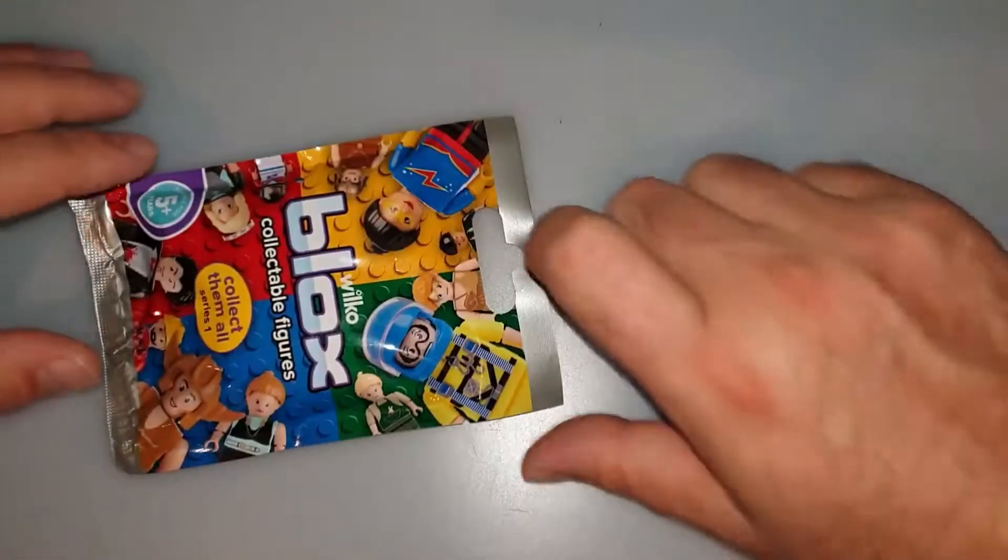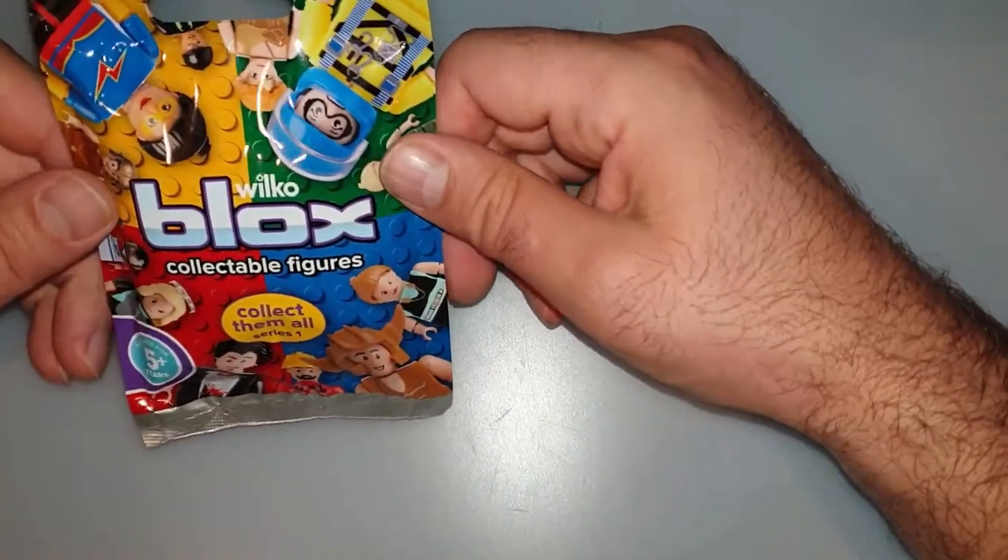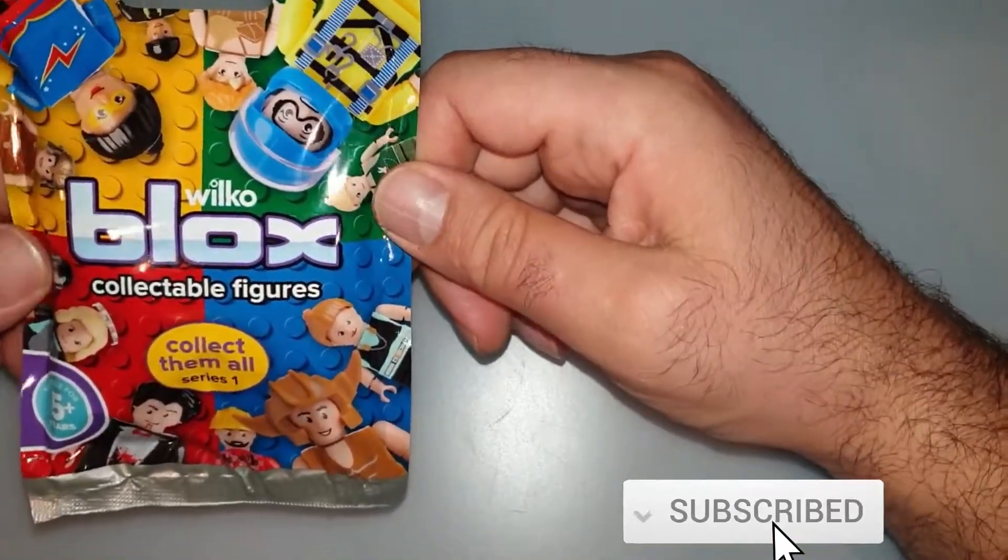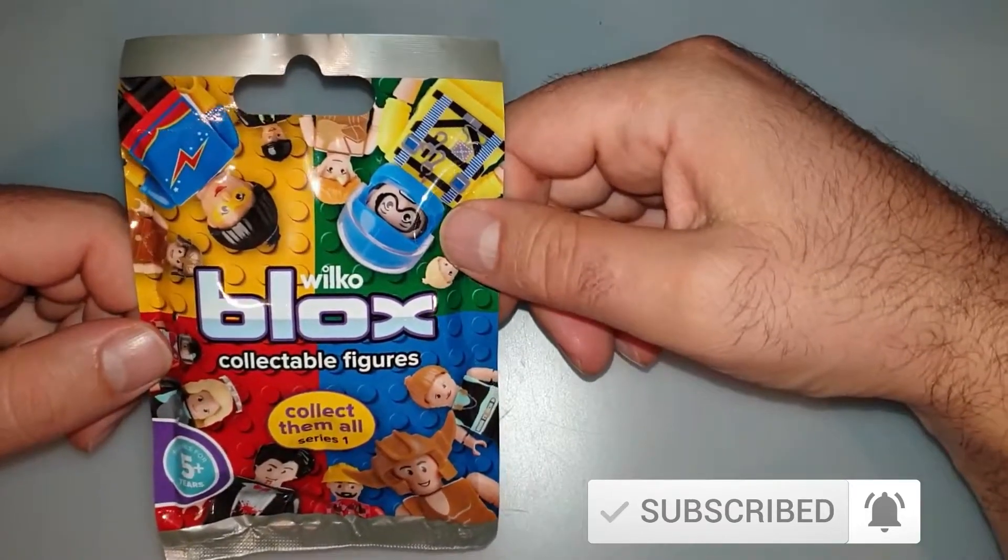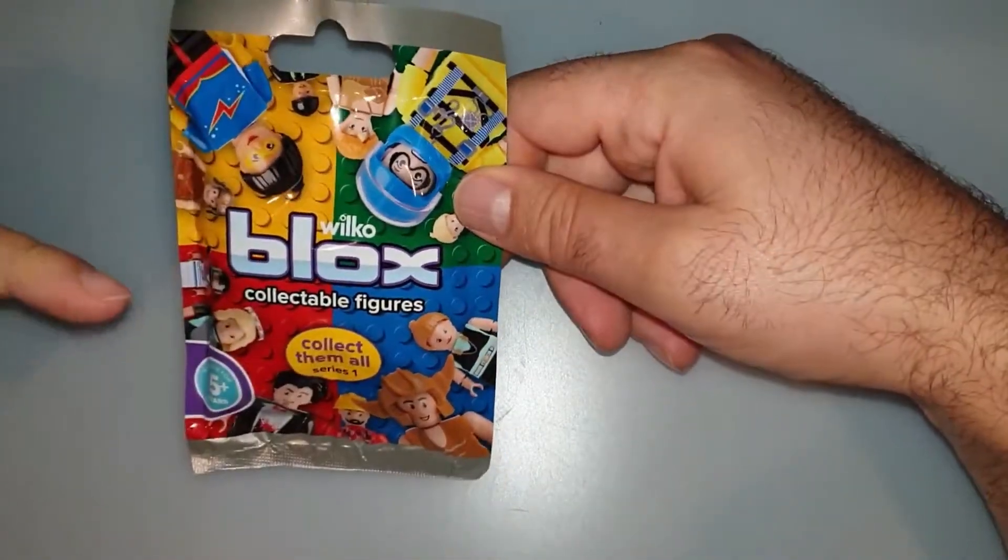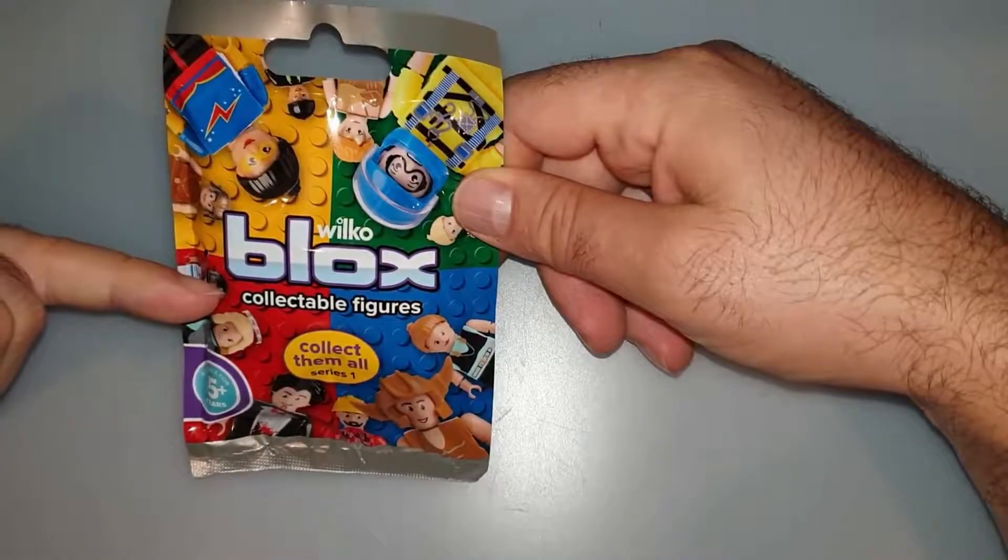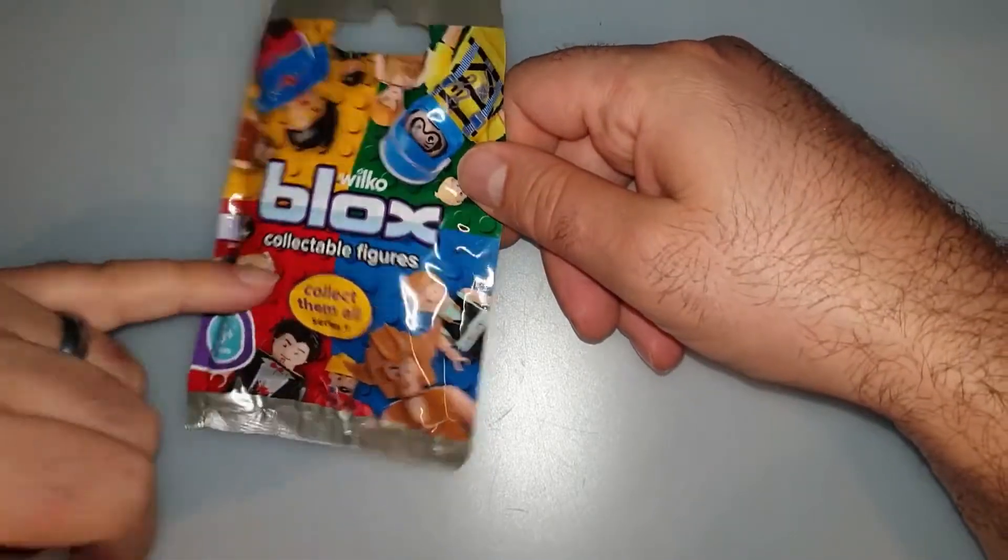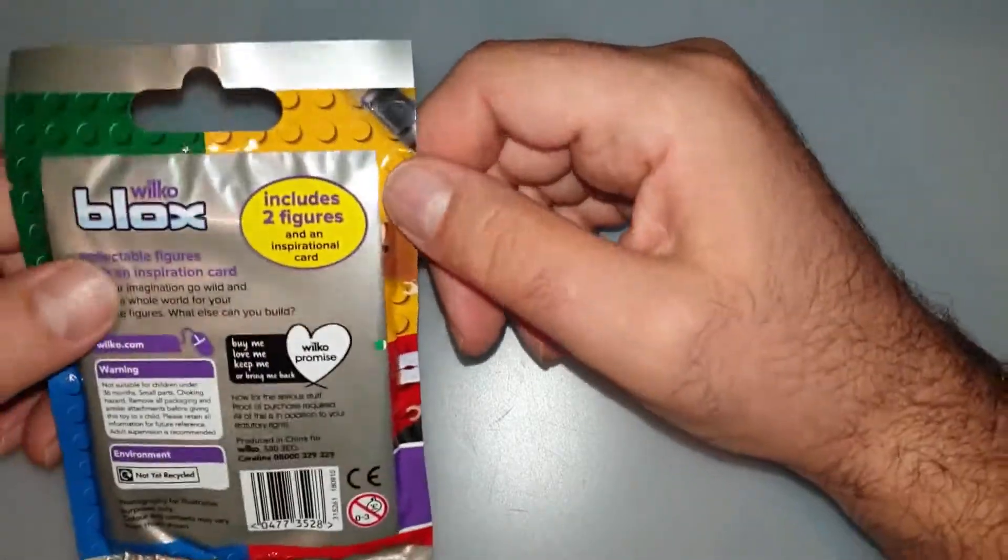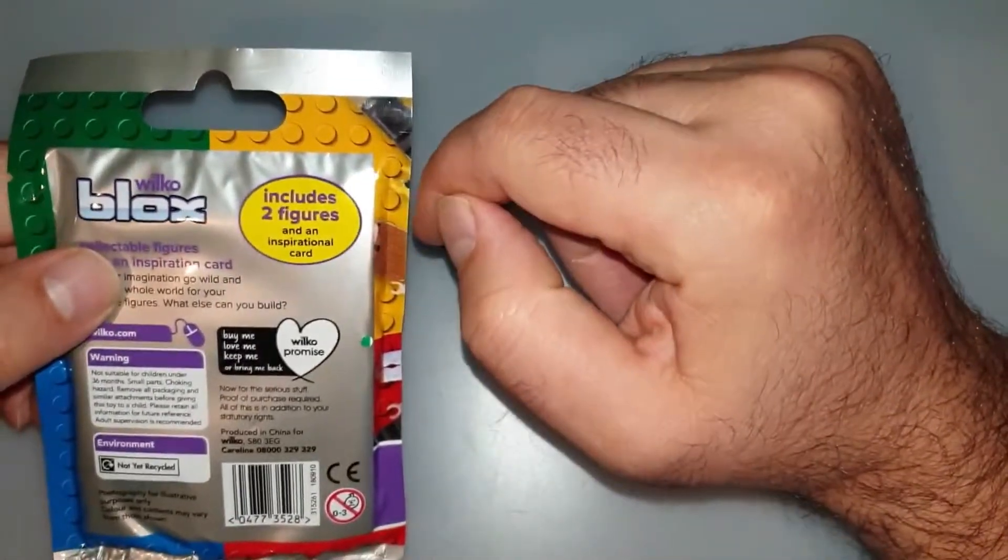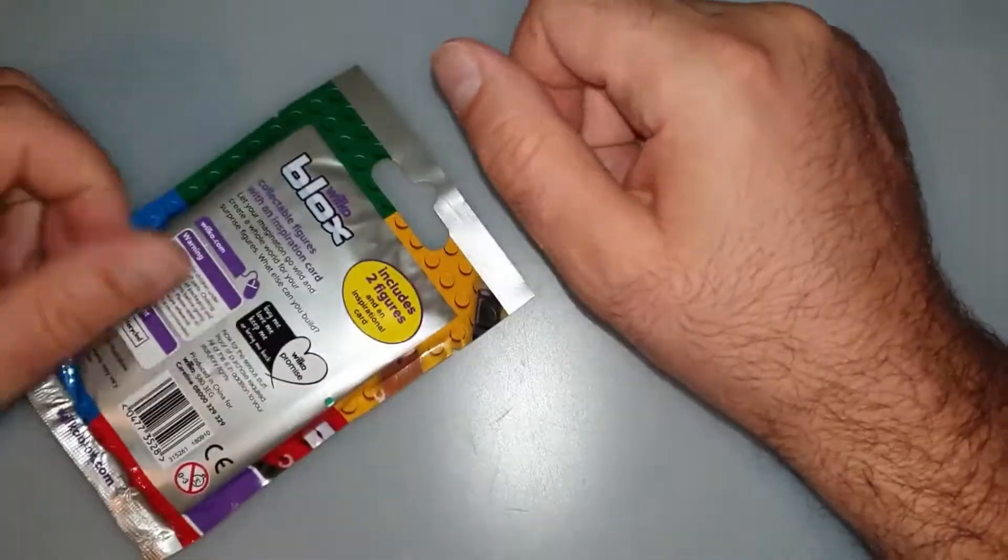Hello guys, I was supposed to make this video a long time ago but for one reason or another I just didn't. So about a month or two ago we found out that Wilco are selling their own Lego copy versions called Blocks. These are collectible figures series one and the good thing about them is that there are actually two in this packet and it cost us only one pound.